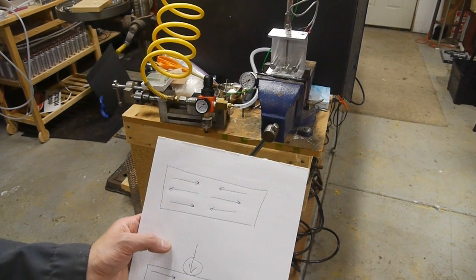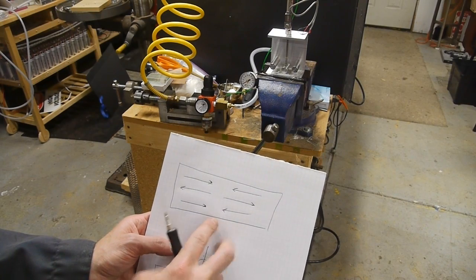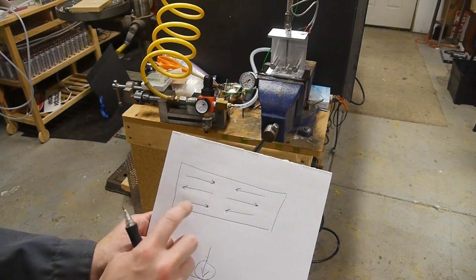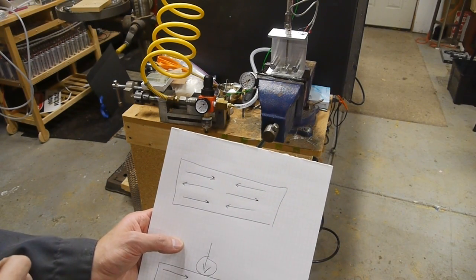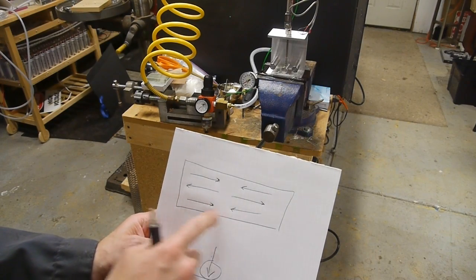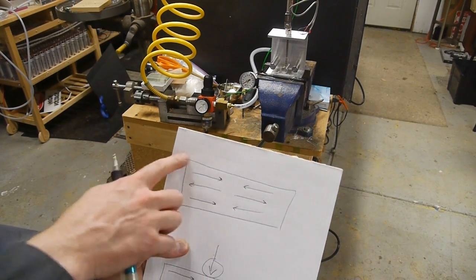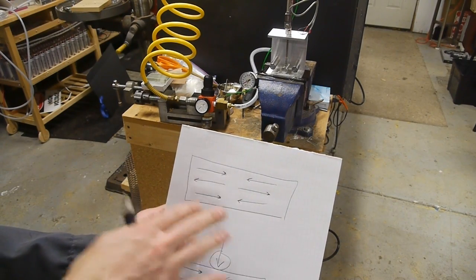So after the treatment what we have is something like this where the edges of the piece of glass are in compression and the center of the glass is actually in tension because of all those extra atoms that we jammed in around the periphery. And this is true around the edges too but I'm just showing it in one direction.